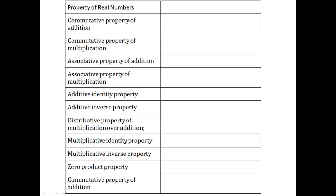Identify the property of real numbers that justifies each equation. Here are all the properties we've studied: commutative property of addition, commutative property of multiplication, and so on. Zero product property means zero times a quantity gives zero — zero times a number is zero.